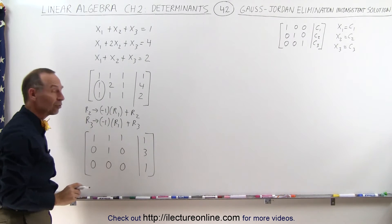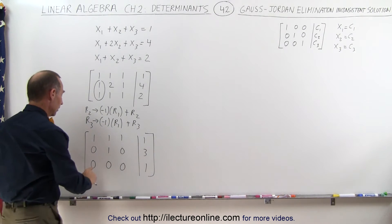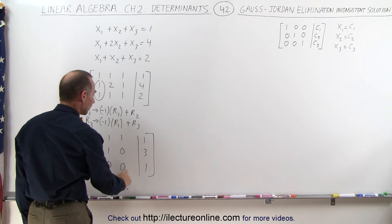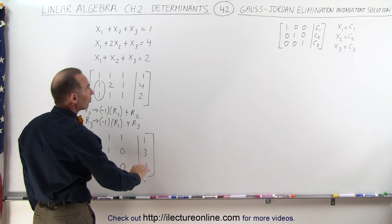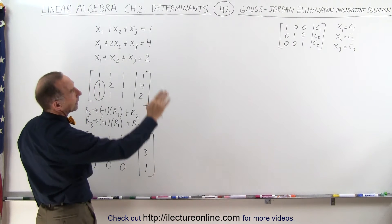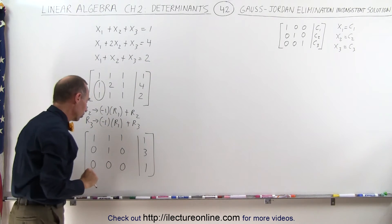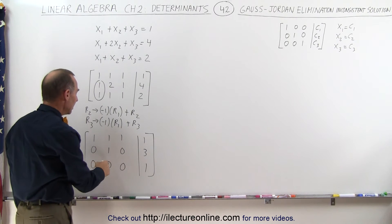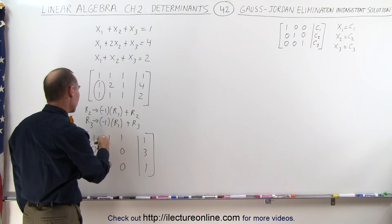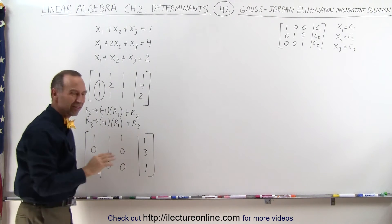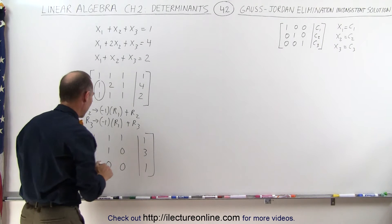Notice there's an obvious problem here: 0 plus 0 plus 0 cannot equal 1. So this is what we call an inconsistent solution. There's no way to eliminate that row, but let's go a little bit further and see what happens.